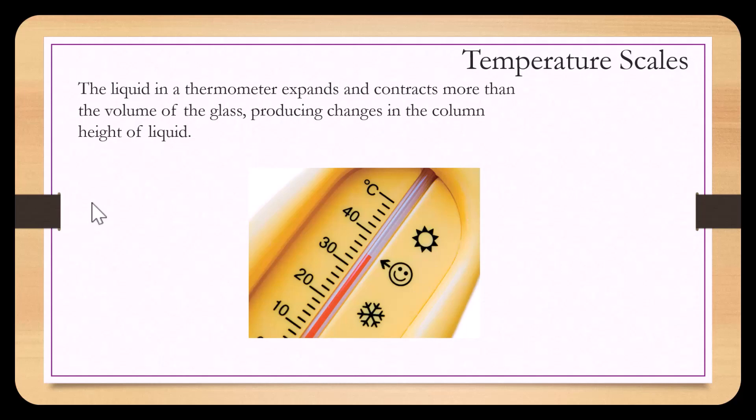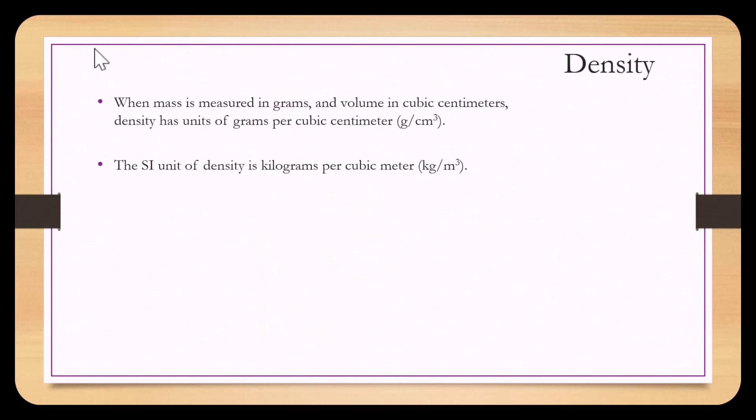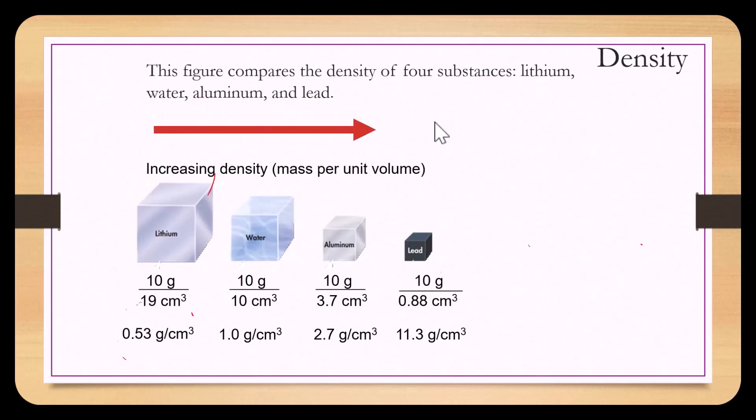When mass is measured in grams and volume in cubic centimeters, density has units of grams per cubic centimeter, denoted as g/cm³. The SI unit for density is kilograms per cubic meter, denoted as kg/m³. A figure compares the densities of four substances — lithium, water, aluminum, and lead — going from left to right the densities increase. All four substances have 10 grams of mass in the figure, but the volume decreases from left to right, showing that as density increases, less volume is required for the same amount of mass.